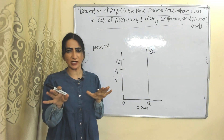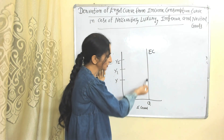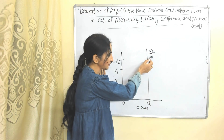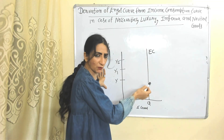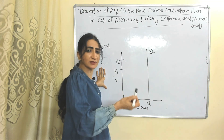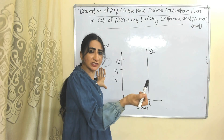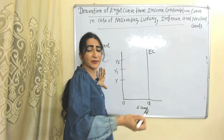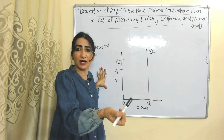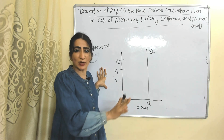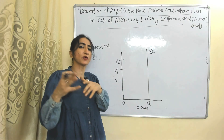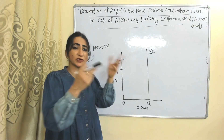Now we'll see the Engel curve in case of neutral goods. In case of neutral goods, the shape of the Engel curve is vertical. That means due to an increase in income, neither demand of the neutral good increases nor decreases. For example, when our income increases, we will not start increasing demand for medicine. That's why in case of neutral goods, demand will not increase or decrease due to an increase in income.